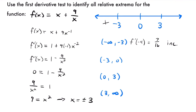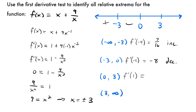Now let's test a value on the interval from negative 3 to 0. I'll pick negative 1. f prime of negative 1 equals 1 minus 9 divided by negative 1 squared, which is 1 minus 9, which is negative 8. That's a negative slope, so the function is decreasing on that interval. Then testing a value between 0 and 3 using positive 1 gives the same result: 1 minus 9 over 1 squared is also negative 8 — the function is also decreasing on that interval.